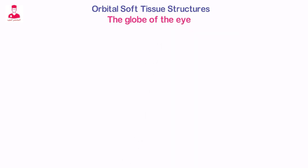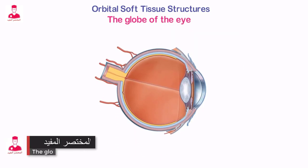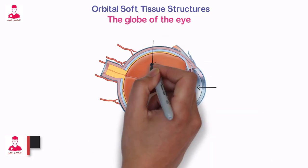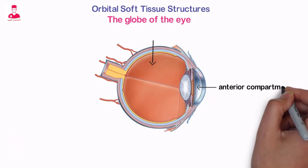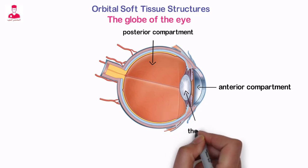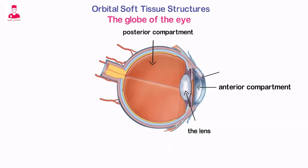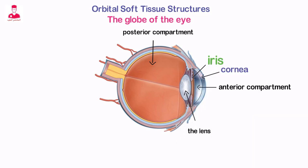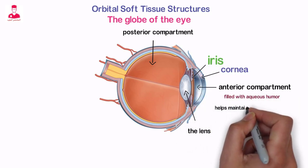The globe of the eye has an irregular, spherical shape and sits in the socket of the bony orbit. The globe is divided into anterior and posterior compartments. The anterior compartment is a small cavity located anterior to the lens. It contains the cornea and iris and is filled with aqueous humor that helps maintain intraorbital pressure.